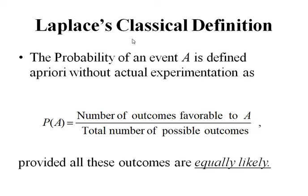According to this definition, the probability P(A) of any event A is determined a priori without actual experimentation.